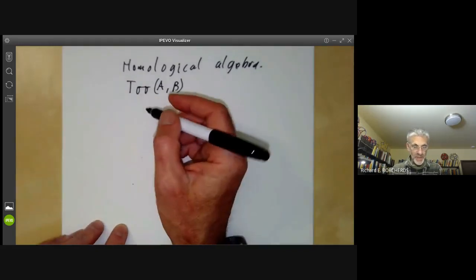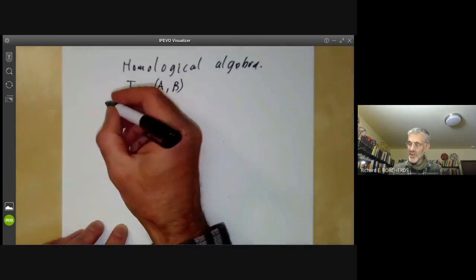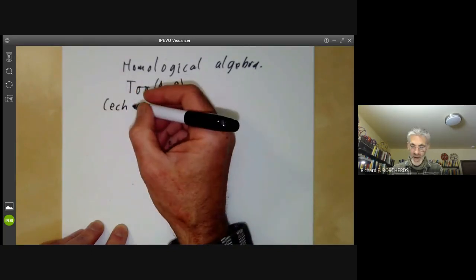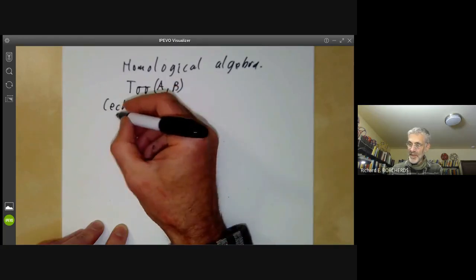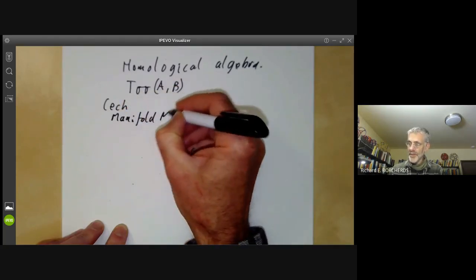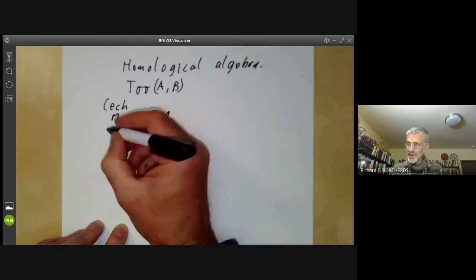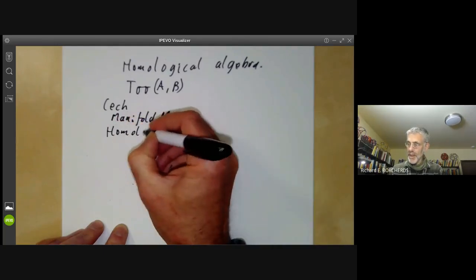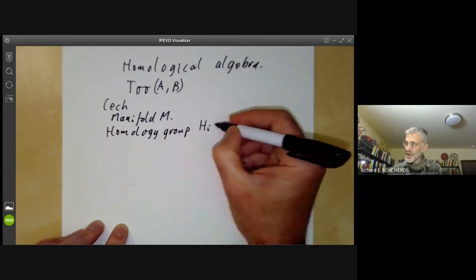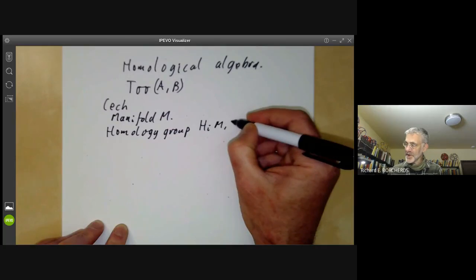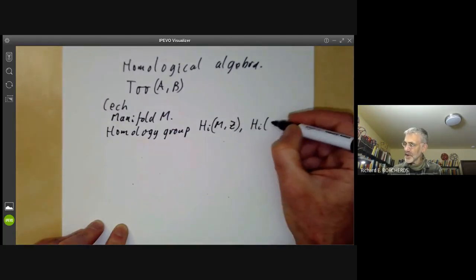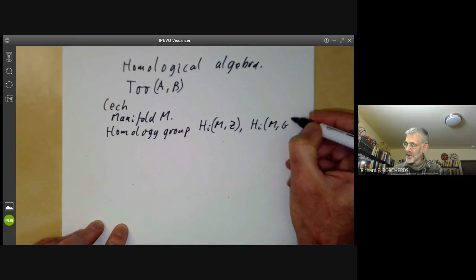The earliest appearance of these was probably introduced by Čech, who was looking at the following problem. Suppose you've got some sort of manifold M. Then it's got homology groups, which are usually denoted by H_i of M with coefficients in Z. And more generally, you can define homology groups of M with coefficients in a group G.